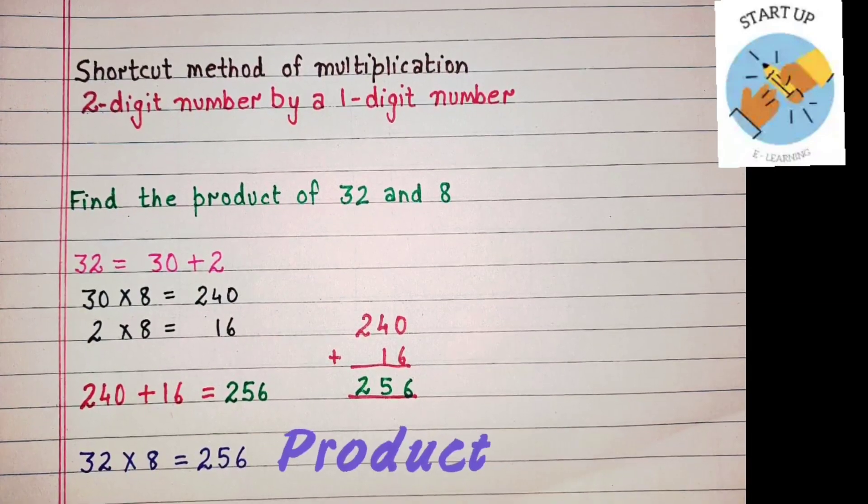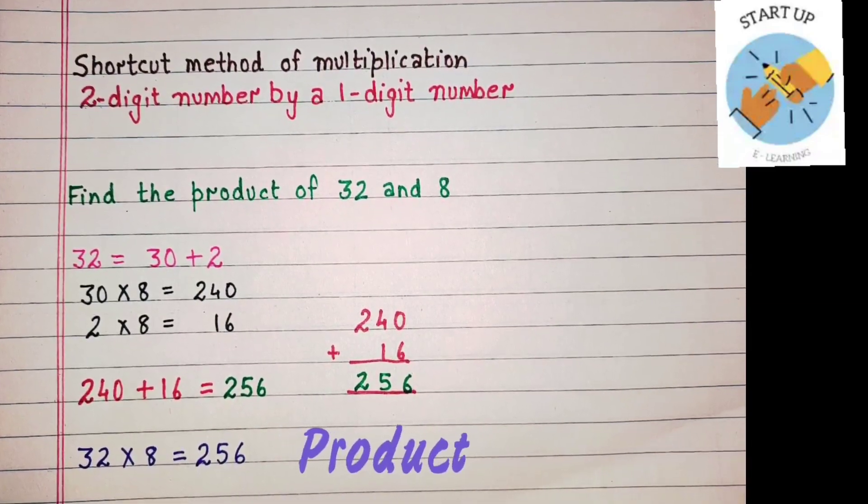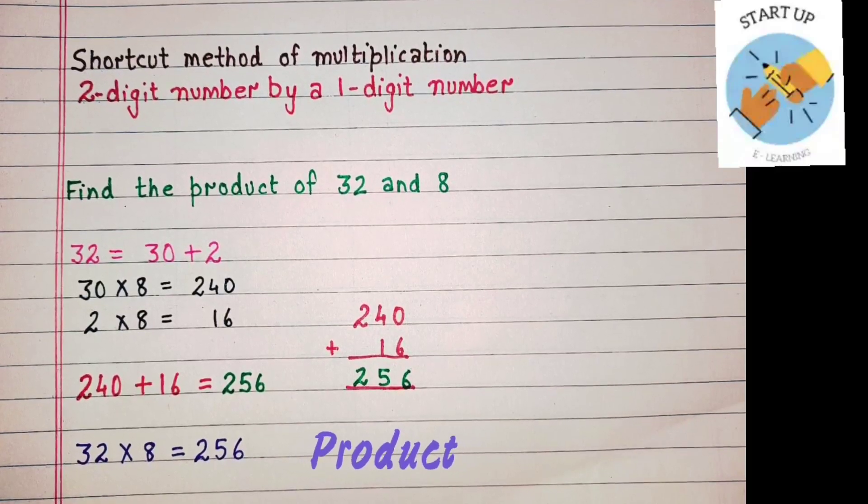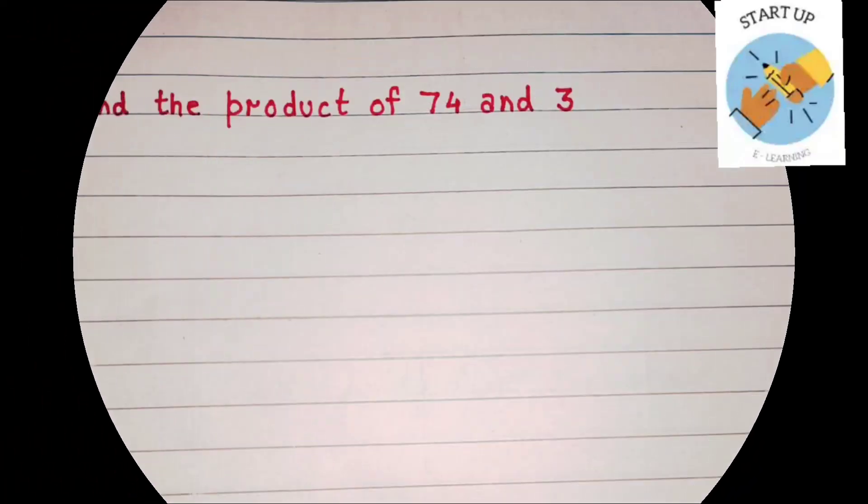So, the product of 32 and 8 is 256. Let's see one more example to understand this in a better way.